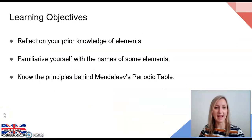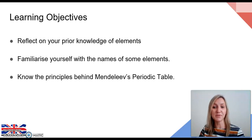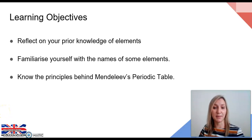In summary, in today's lesson — lesson one from the periodic table topic — we have looked at our prior knowledge of elements, reminded ourselves of the definition of an element as a pure substance made of only one type of atom. We've used the RSC's interactive periodic table to familiarise ourselves with the names of many elements and their symbols, and discussed how those symbols came to be. We then looked at the principles behind Mendeleev's periodic table and the history of how he was able to construct this, and how it linked into the modern periodic table that we use throughout chemistry and science today.